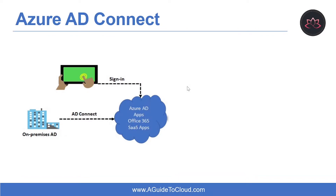One of the most important tools or components you need to understand for Hybrid Identity is Azure AD Connect. Azure AD Connect will integrate your on-premises directories with Azure Active Directory. This allows you to provide a common identity for your users for Office 365, Azure, and SaaS applications integrated with Azure AD.